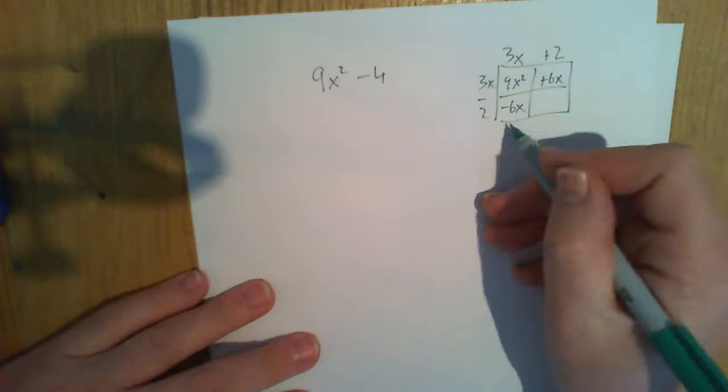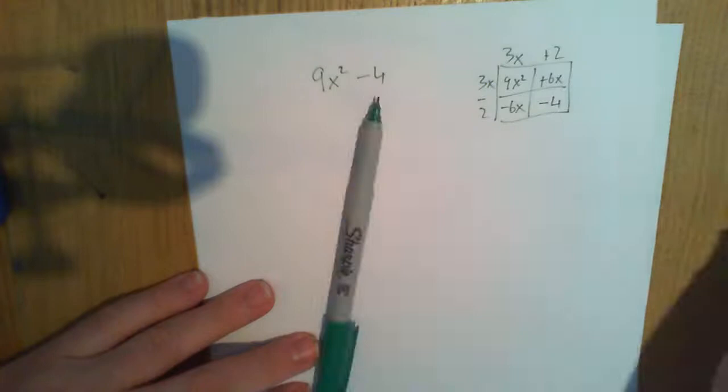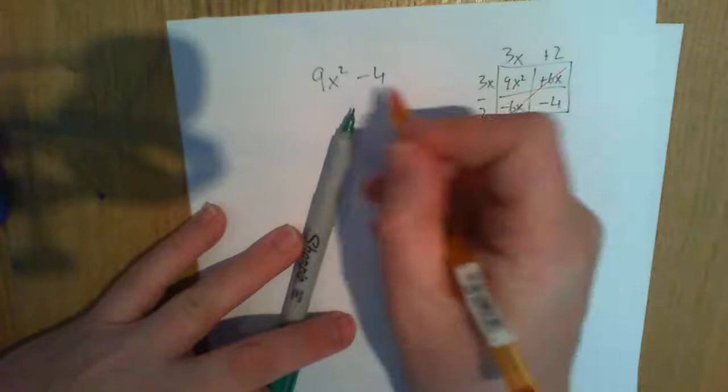So, what is this factorized out? Well, it's just 3x plus 2, 3x minus 2. That's what it is when it's factorized out. This is the ultimate answer we're looking for.